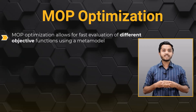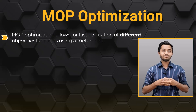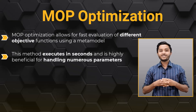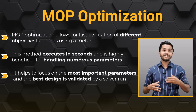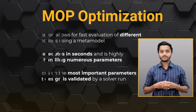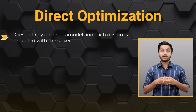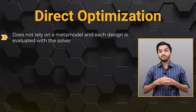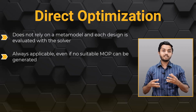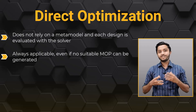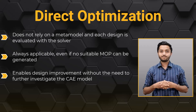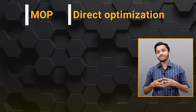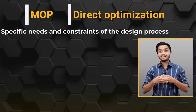MOAP optimization allows for fast evaluation of different objective functions using a metamodel. This method can take just seconds to execute and is particularly advantageous when dealing with a large number of parameters. It helps to focus on the most important parameters, and the best design is validated by a solver run. On the other hand, direct optimization does not rely on a metamodel and each design is evaluated with the solver. This approach is always applicable even if no suitable MOAP can be generated, and it enables design improvement without the need to further investigate the CAE model.